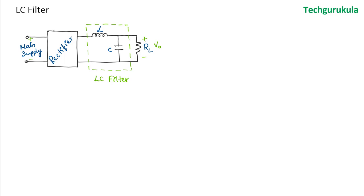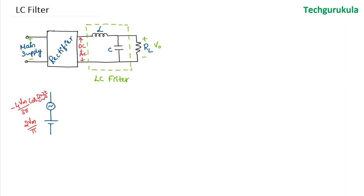Now let us start the analysis. The output of the rectifier has both DC and AC components. The output voltage can be modeled as a DC source with value 2Vm/π and an AC source taking only one harmonic component: −4Vm/(3π) · cos(2ω₀t), where 2ω₀ is the second harmonic — the lowest harmonic frequency at the output of the full wave rectifier, and ω₀ is the input mains AC frequency.